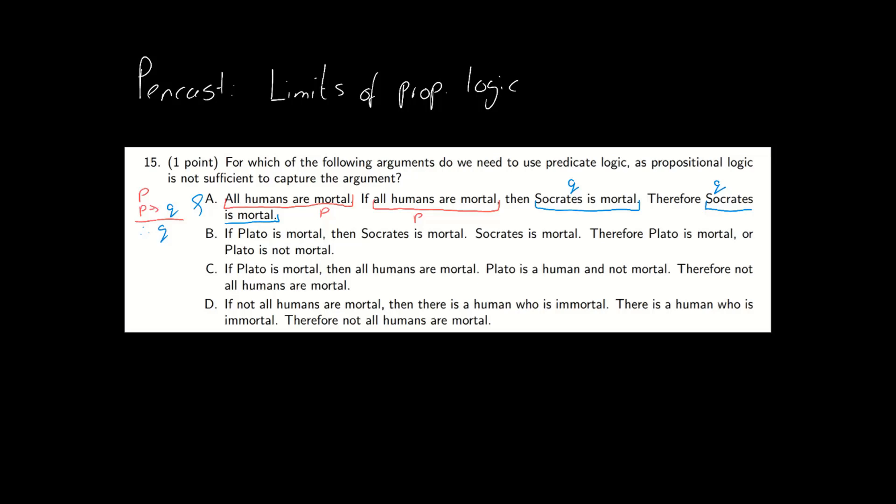What about the second one? 'Plato is mortal' occurs twice, we can call that p. And then not p also occurs once. Okay great, so we've got p, p and not p, and then 'Socrates is mortal' occurs twice, we'll call that q.